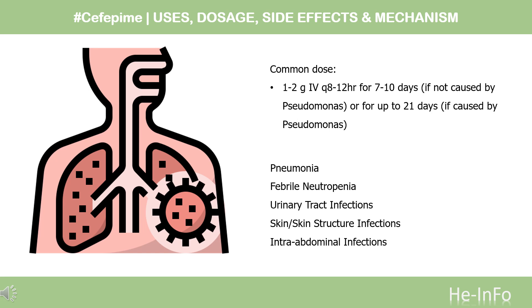Febrile neutropenia: Empiric therapy in febrile neutropenic patients, 2g IV Q8 hours for 7 days or until neutropenia resolves.